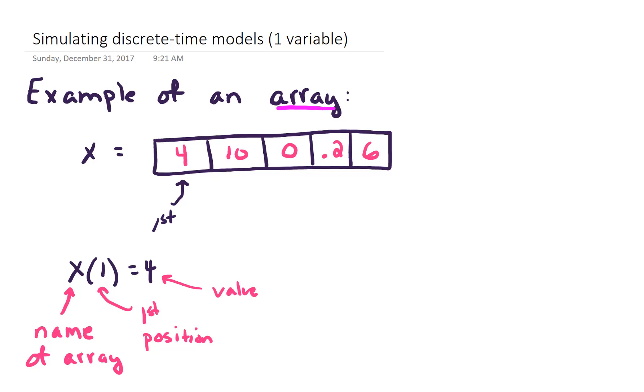So for example, if I wanted to list the other values here, I could say x(2) equals, well the value in the second position is 10. Similarly, x(3), what's the value in the third position? That's 0. x(4), that's 0.2. And x(5) equals 6.